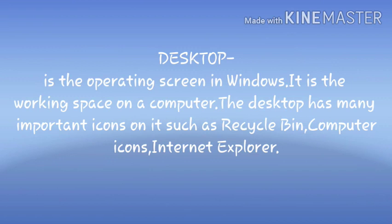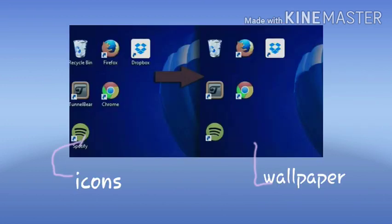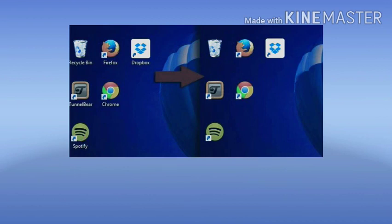Next, the desktop. What is the desktop? It is the opening screen in Windows — it is the working space on a computer. The desktop has many important icons such as Recycle Bin, Computer icon, and Internet Explorer. You have seen in your desktop there are small icons; these are the important icons on the desktop.